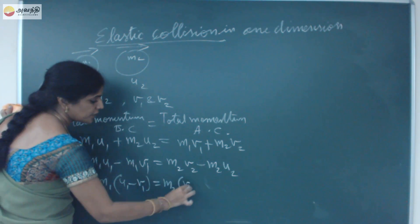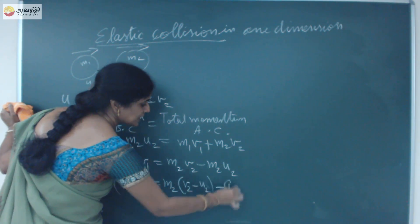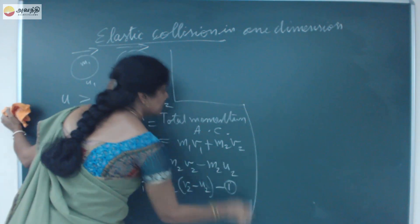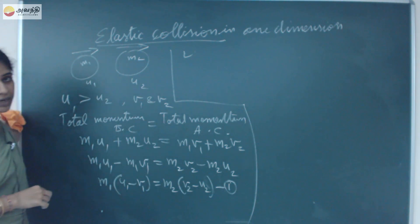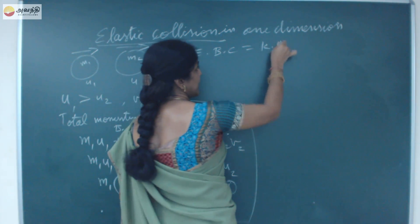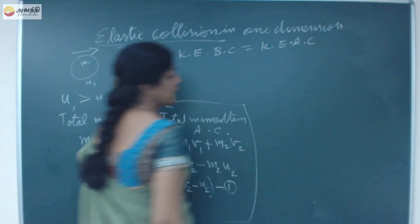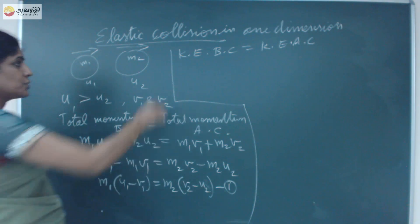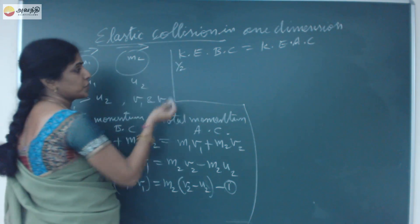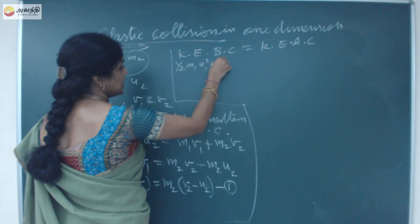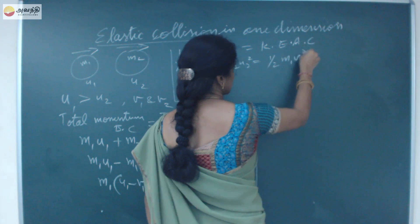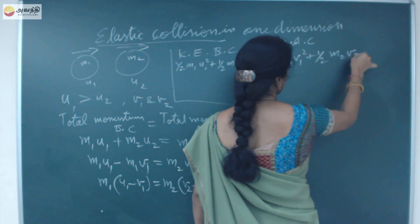From the momentum equation, M1(U1 - V1) is equal to M2(V2 - U2). This will be equation 1. Also, by conservation of kinetic energy: half M1 U1 squared plus half M2 U2 squared is equal to half M1 V1 squared plus half M2 V2 squared.